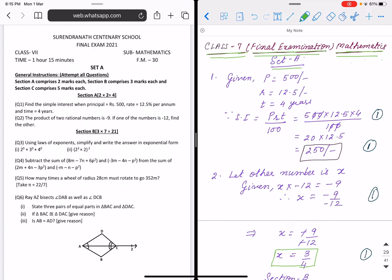So, what is the question? Find the simple interest when principle is 500, given R is 12.5% and T is 4 years. What is the formula of SI? P R T by 100.